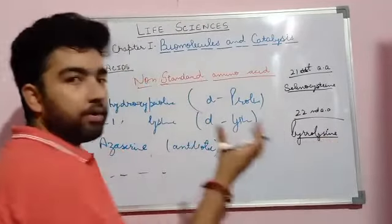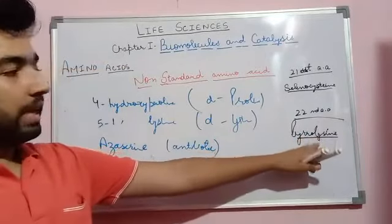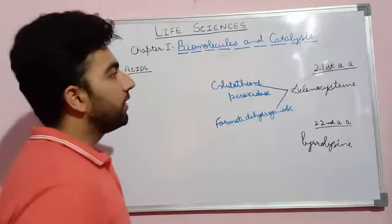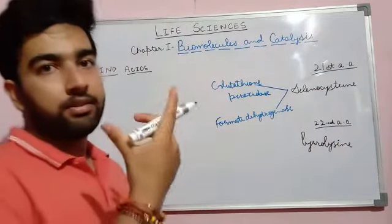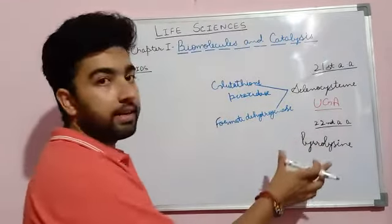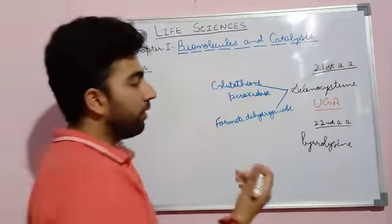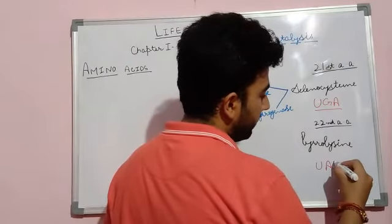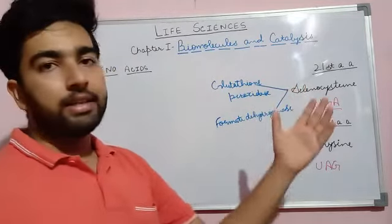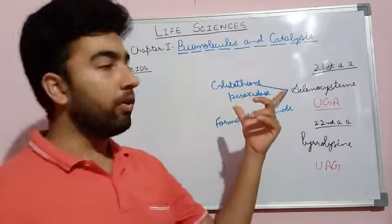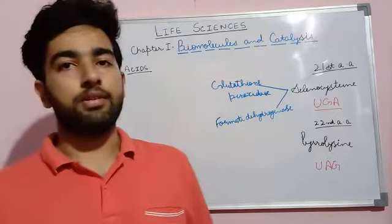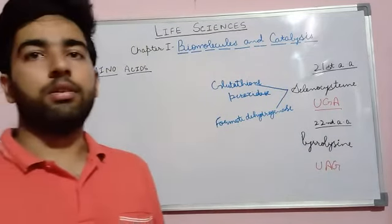The 22nd amino acid is pyrrolysine, which is basically a derivative of lysine. Pyrrolysine is also encoded by a 3-letter codon known as UAG, which is one of the stop codons. Selenocysteine is present in the catalytic centers of two enzymes: glutathione peroxidase and formate dehydrogenase. This concludes the concept of standard and non-standard amino acids, their types, names, and descriptions. Thank you.